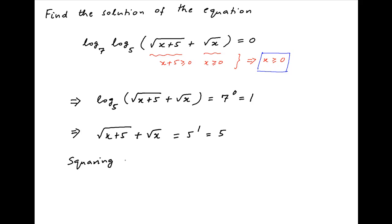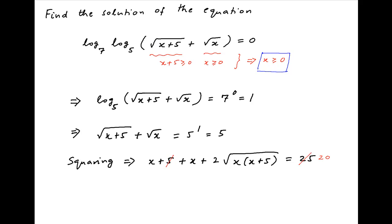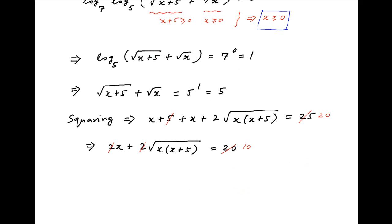Now, taking the square of both sides, we get x plus 5 plus x plus 2 times root of x times (x plus 5) is equal to 25. This simplifies to 2x plus 2 times root of x times (x plus 5) is equal to 20. Dividing both sides by 2, this expression can be written as root of x times (x plus 5) is equal to 10 minus x.